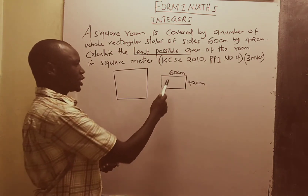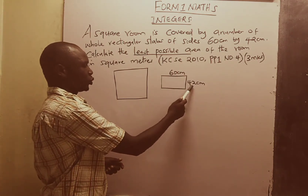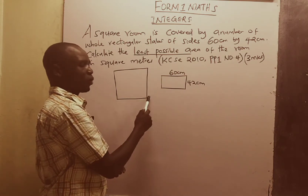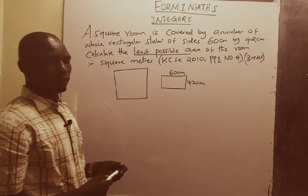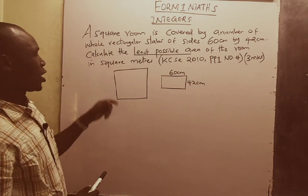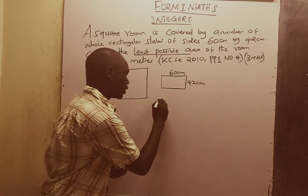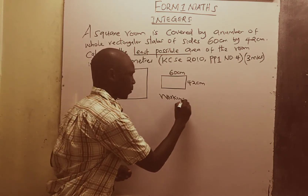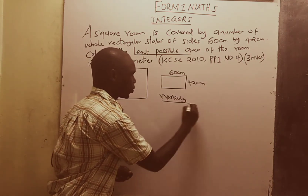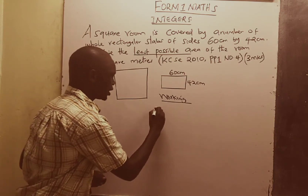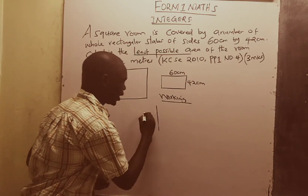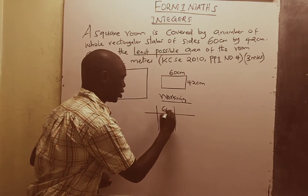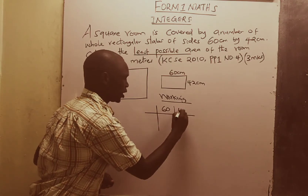By getting the LCM of 60 and 42, we will get one side — the length of one side of the room. So let us look at the working to this question. We are going to start by looking at the LCM of 60 and 42.